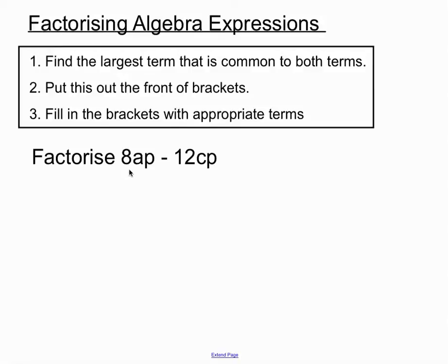Biggest thing that can go into this - now we can find a number and a letter in this question. Biggest thing that goes into 8 and 12 is 4, and you can notice that there's a p in both of them. So we've got to take a term out the front with a 4 and a p in it. Then we're asking what have we got to multiply 4p by to get 8ap? We'll need a 2 and an a to create that term. What are we going to multiply 4p by to get minus 12cp? We'd need to multiply 4 by minus 3 and a c. So we're always keeping in mind that we can expand this and get back to the original question.